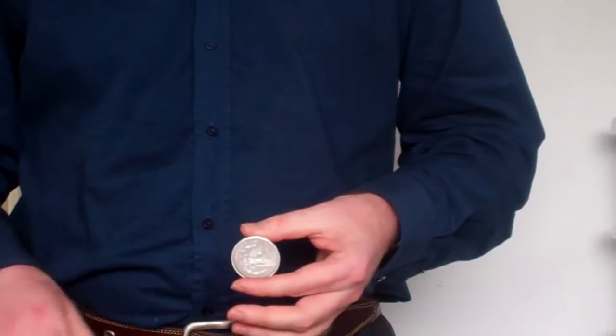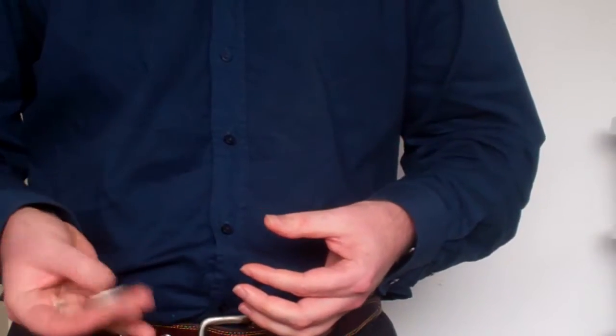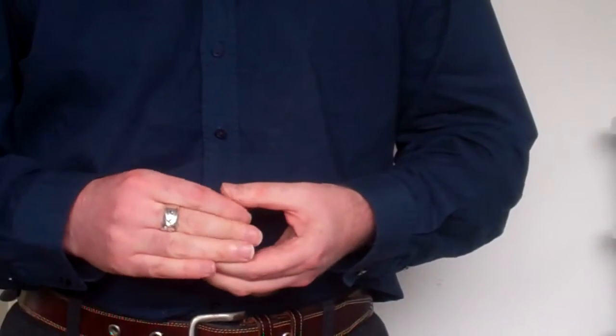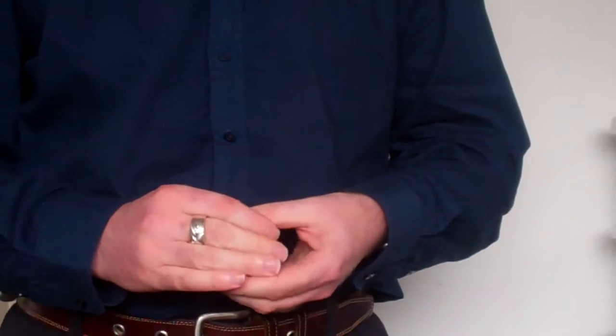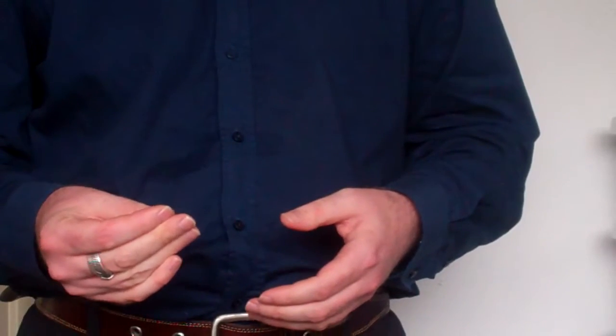So if I held a coin like this I'd just pick it up between my fingers like this. So that's what you have to do if you do a French drop. You have to pretend to pick it up just like you would normally.